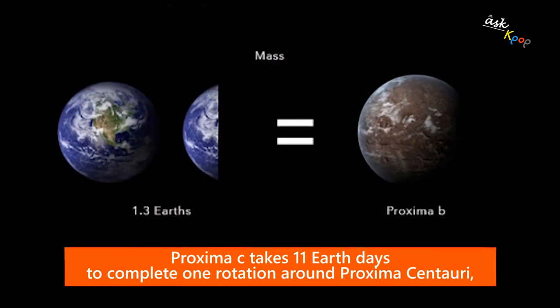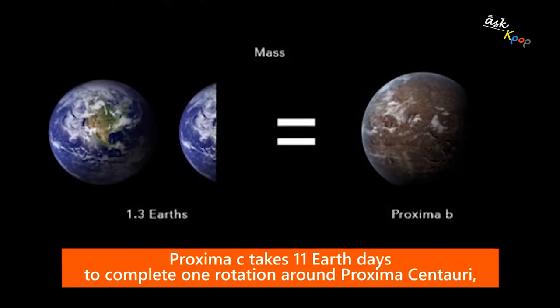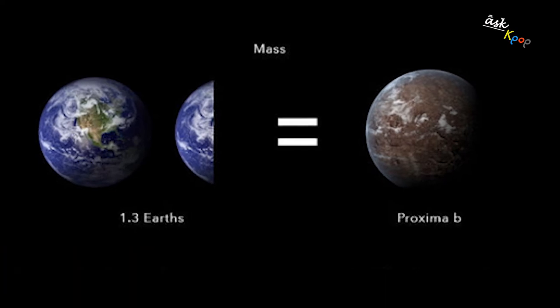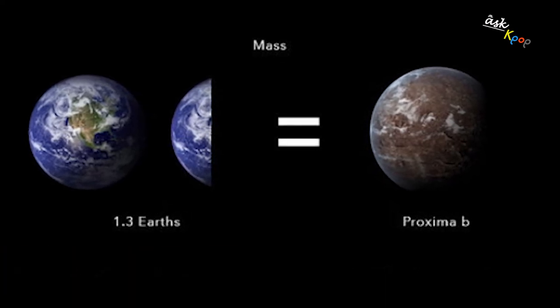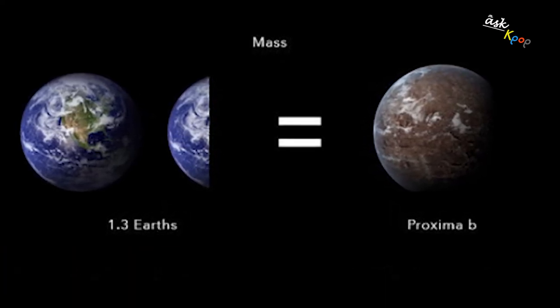Proxima b takes 11 Earth days to complete one revolution, which means that a year on Proxima b would equal 11 days in humanity's home.